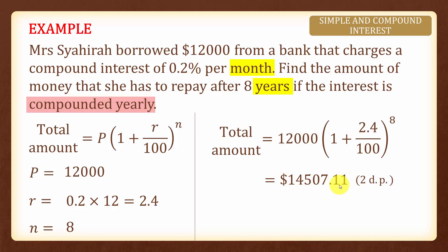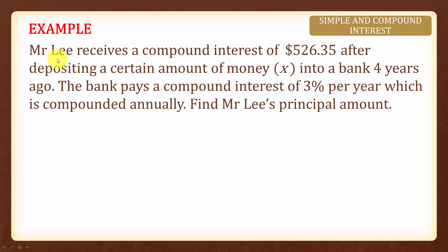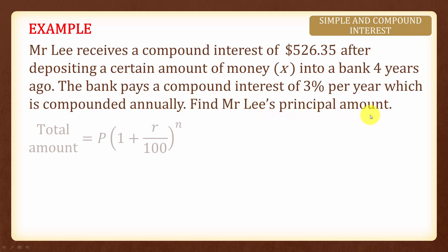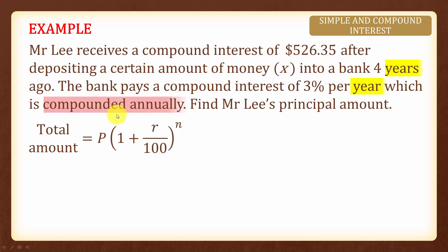In this next example, Mr. Lee receives a compound interest of five hundred and twenty-six dollars and thirty-five cents after depositing a certain amount of money into the bank for four years. The bank pays a compound interest of three percent per year, compounded annually. We are asked to find Mr. Lee's principal amount. Note that this formula gives the total amount, but we are given the compound interest instead.